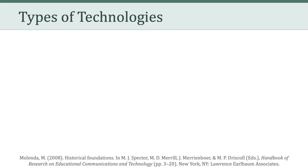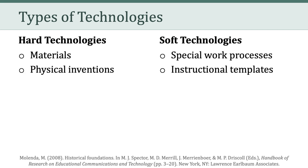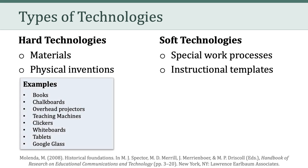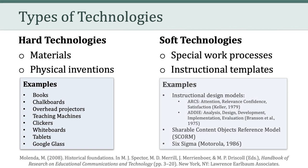We've already talked about technology writ large and learned that technology includes things, tools, machines, symbols, objects, and techniques. All technologies are combinations of elements, and those elements themselves are actually technologies. Broadly speaking, educational technologies fall into two categories: hard technologies and soft technologies. Examples of hard technologies can be physical things such as books, chalkboards, interactive whiteboards, tablets, and virtual reality. Examples of soft technologies are processes or templates — these might be instructional design models, or certain standards such as shareable content objects or the Six Sigma process.